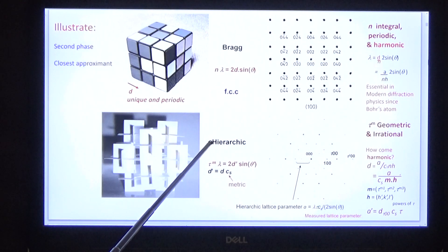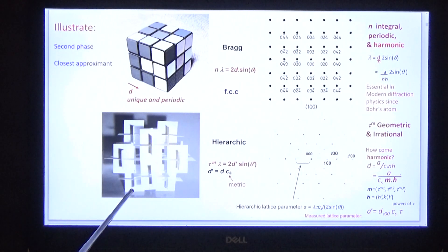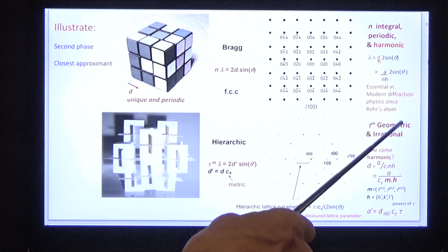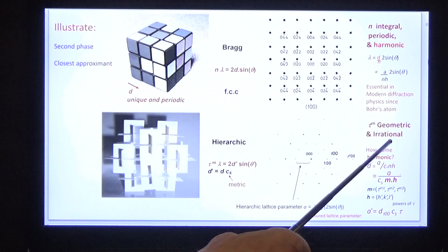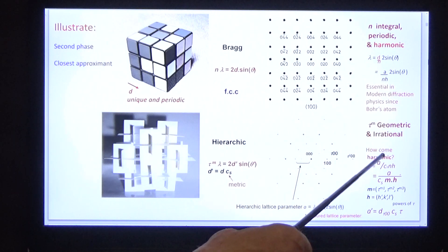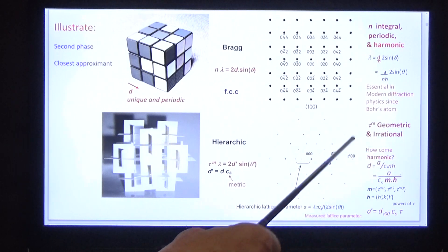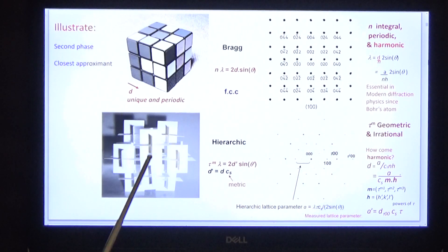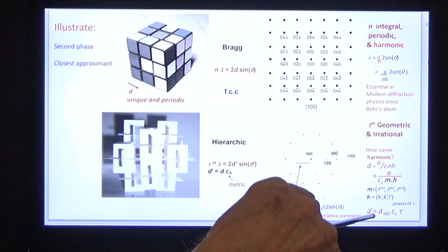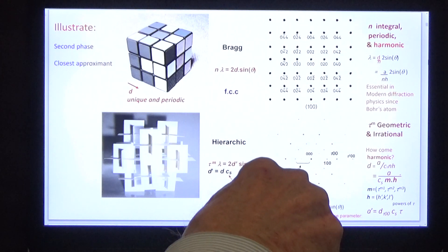Quasi-crystals are different. The icosahedral hierarchic structure obeys the quasi-Bragg law, where the order n is geometric and irrational. Here it is: n equals 0, 1, 2, 2, 2, 2, 3, 4 — where 2 is an irrational number. And we shall see how the harmony arises in the following slides.